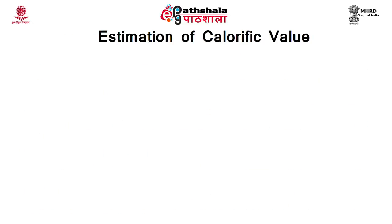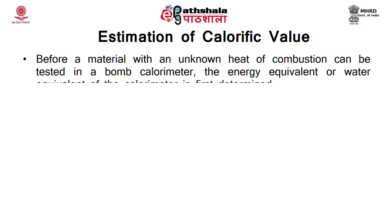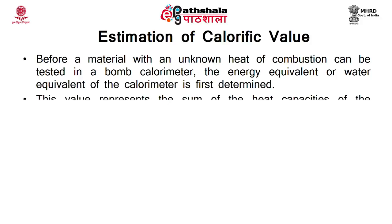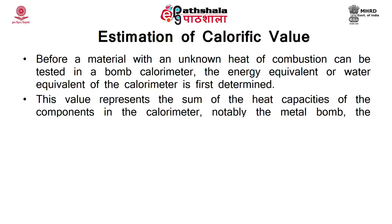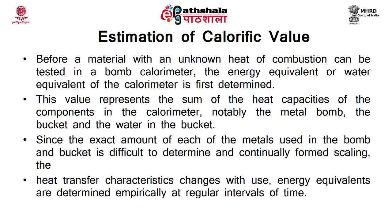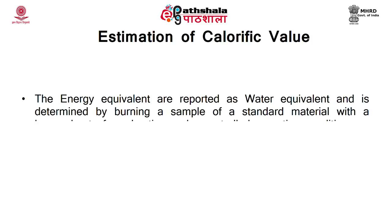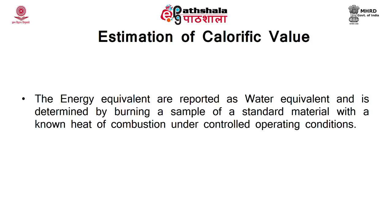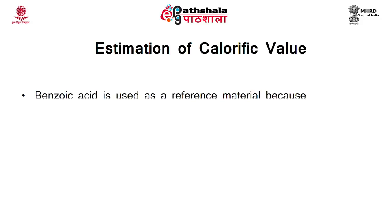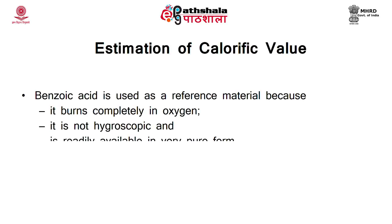Before a material with unknown heat of combustion is tested, the energy equivalent — also called water equivalent — of the calorimeter is first determined. This value represents the sum of heat capacities of the components: the metal bomb, the bucket, and the water. Since the exact amount of each metal is difficult to determine and heat transfer characteristics change with use, the energy equivalent is determined empirically at regular intervals. The energy equivalent is determined by burning a standard material with a known heat of combustion under controlled conditions. Normally benzoic acid is used as reference material because it burns completely in oxygen, is not hygroscopic, and is readily available in very pure form.